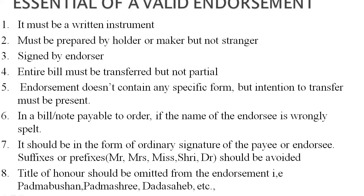The fourth essential is that the entire bill must be transferred — not partially. When doing this kind of endorsement, it should be a full endorsement. Whatever amount is mentioned in the bill or negotiable instrument, it should be full endorsement, not partial. The fifth essential is that endorsement does not require any specific form, but the intention to transfer must be present. There are no specific rules and regulations to be maintained in the process, but the intention of transfer should be specified.